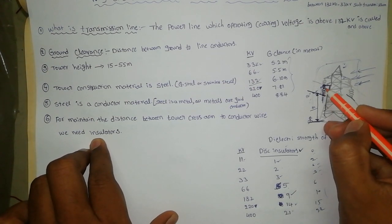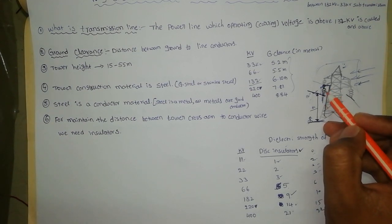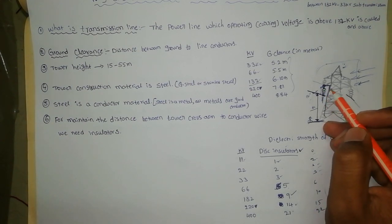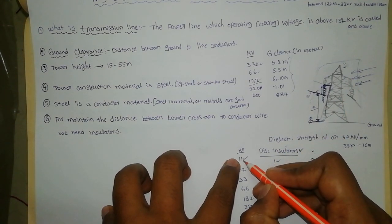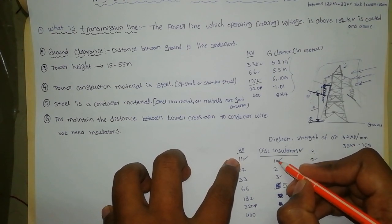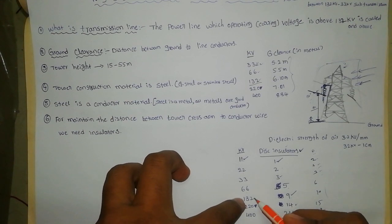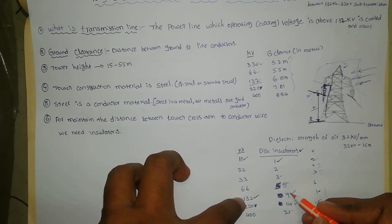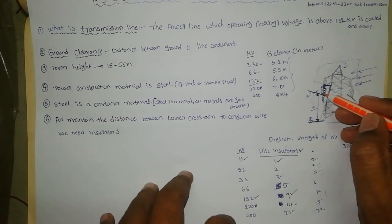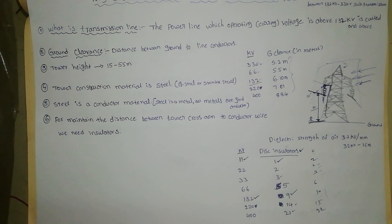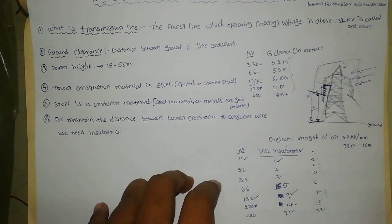We use disc insulators for this purpose. If the operating voltage is 11 kV, you need only one disc. For 400 kV, you need 21 discs. These insulators hold the conductors, while steel provides the strength as the preferred structural material.